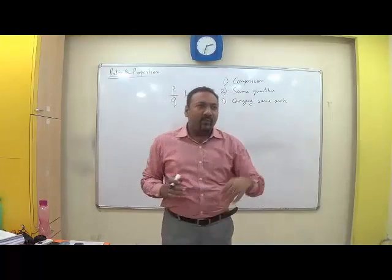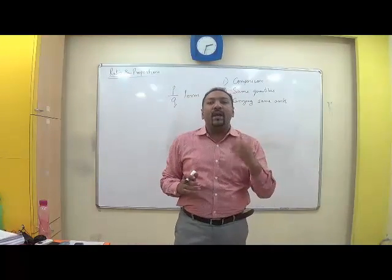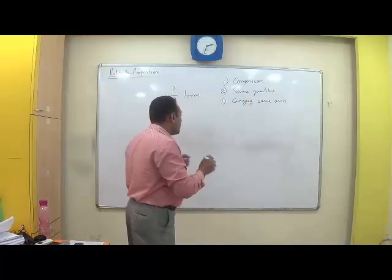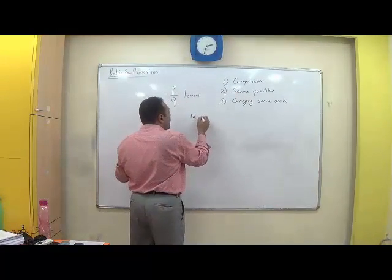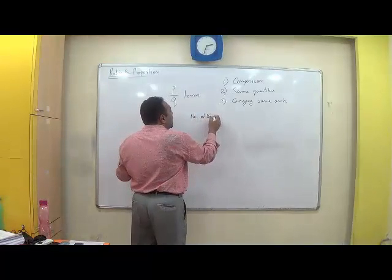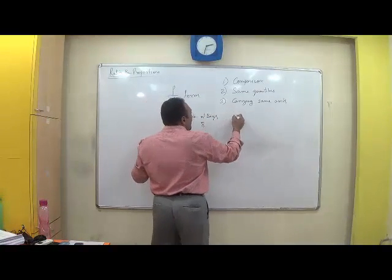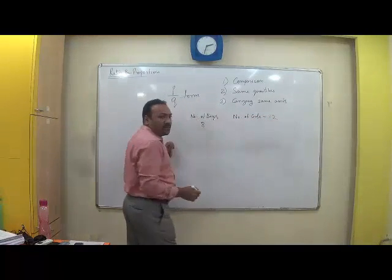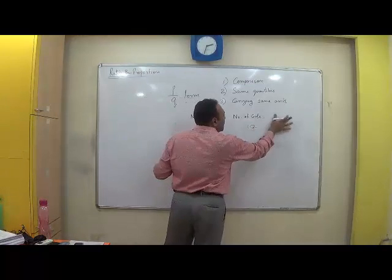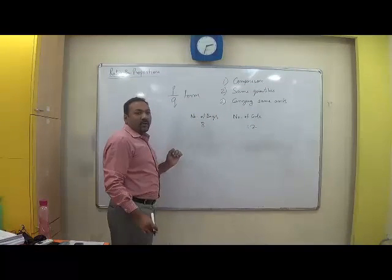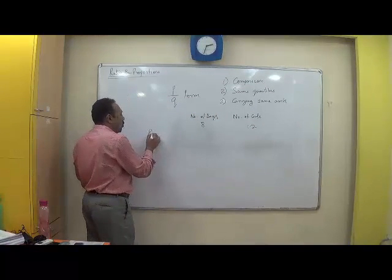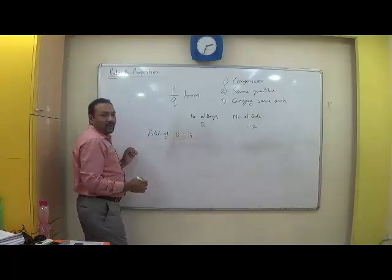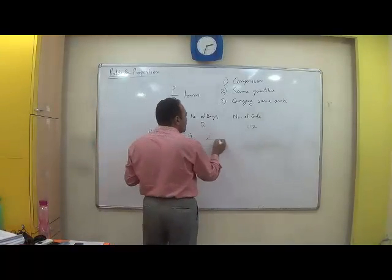Let us say I compare quantity, the number of boys to number of girls in a class. If I say number of boys is 8 and number of girls is 12, what is the ratio? What is the ratio of boys to girls? Very simple, 2 is to 3.